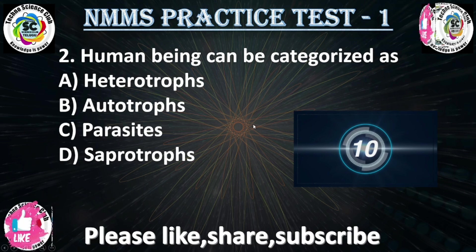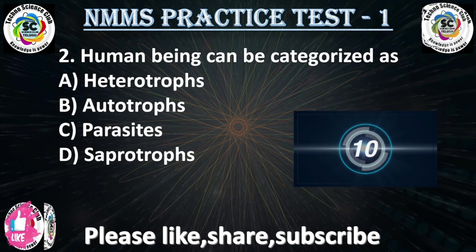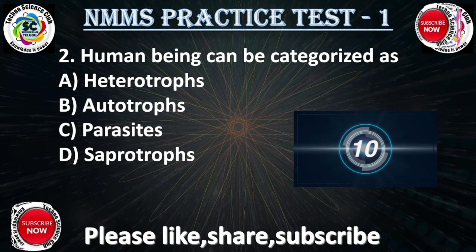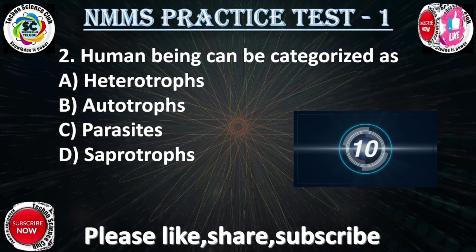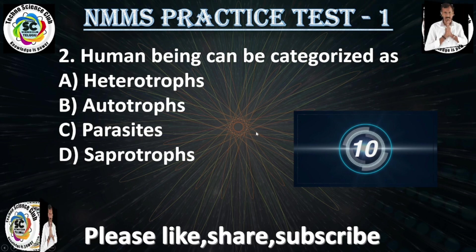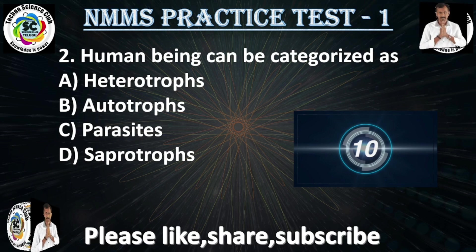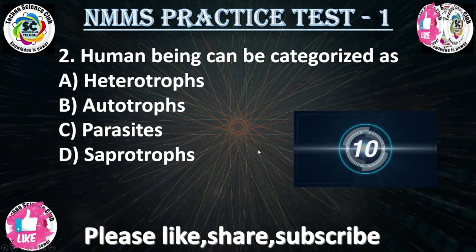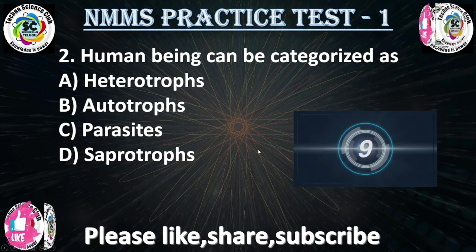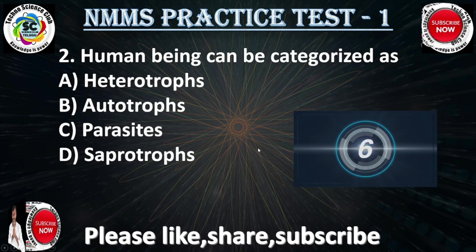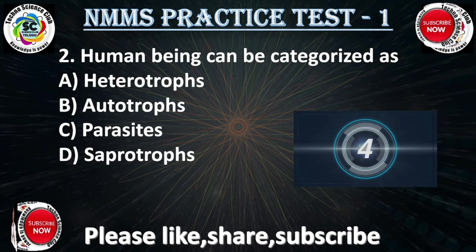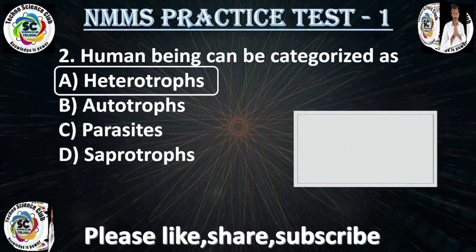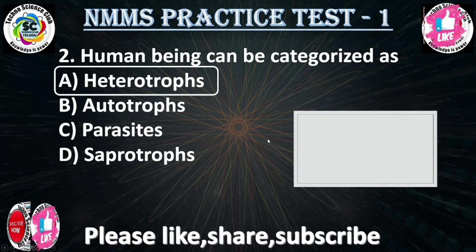Second question: human beings belong to which category? Option A: heterotrophs, Option B: autotrophs, Option C: parasites, Option D: saprophytes. Your time starts now. The answer is heterotrophs — human beings belong to heterotrophs.